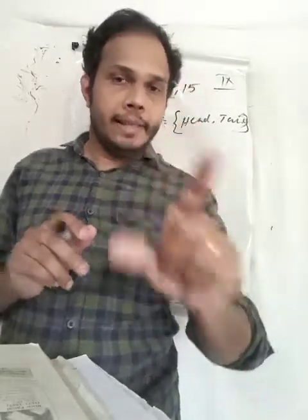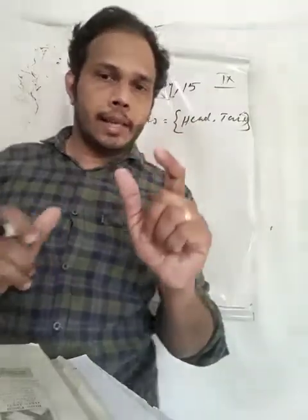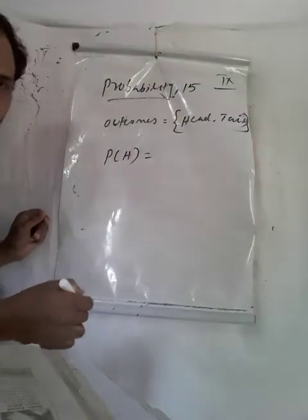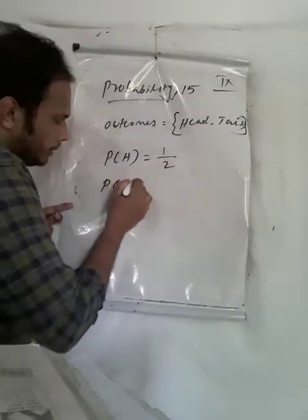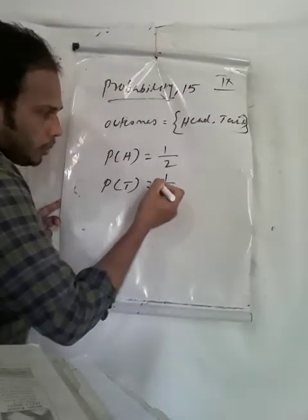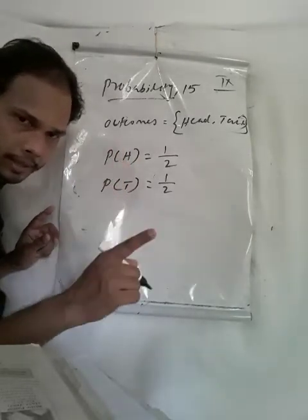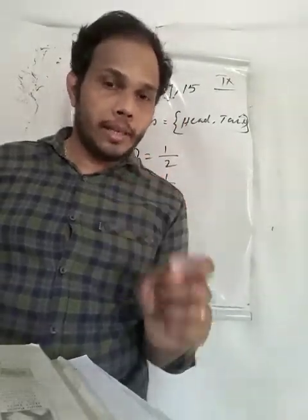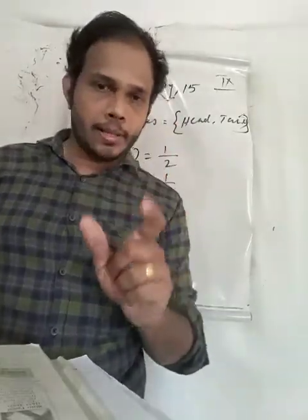Out of those 2 cases, the probability of getting a head — P of head — is equal to 1 by 2. What is the probability of tail? That also equals 1 by 2. Total cases is 2, out of which there is 1 tail. So while tossing a coin one time, the probability of getting a tail and a head is both 1 by 2.